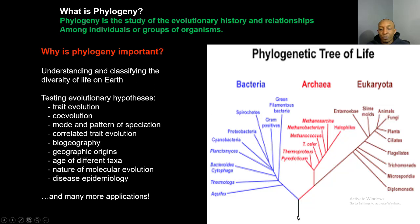We have three main domains: bacteria, archaea, and eukaryota. All three of these domains had a common ancestor, but as we go through time, bacteria branches off by itself, and then archaea and eukaryota are actually on the same branch. Eventually archaea branches off by itself, leaving eukaryota over here to the right.